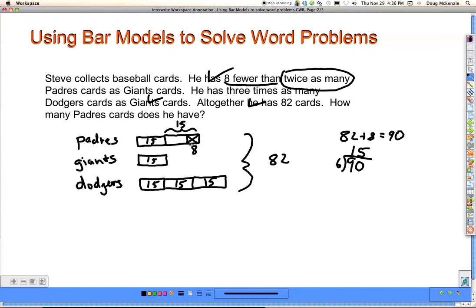Alright, the question is how many Padres cards does he have? Well, looking at the Padres, this is 15. This whole unit is 15 but there are eight missing. He has eight fewer than twice as many. So how much is this? Well, 15 minus eight equals seven, and 15 plus seven equals 22 cards for the Padres.